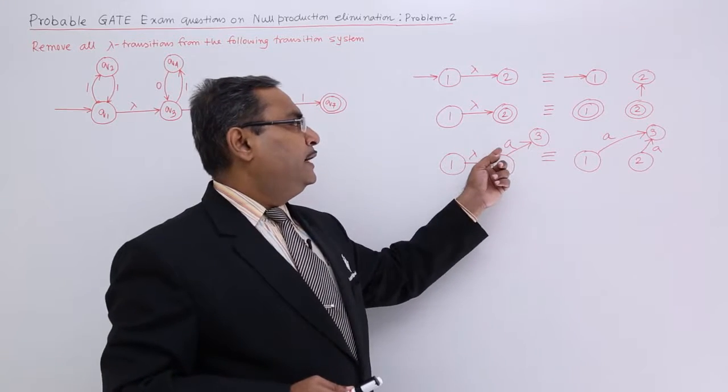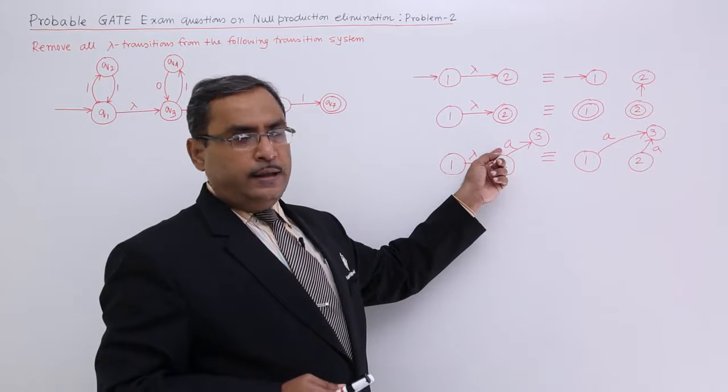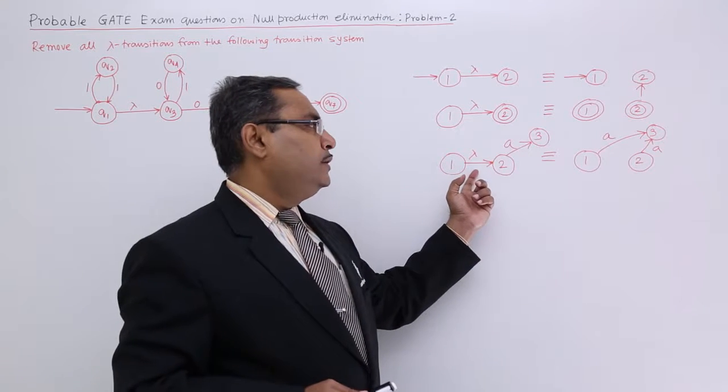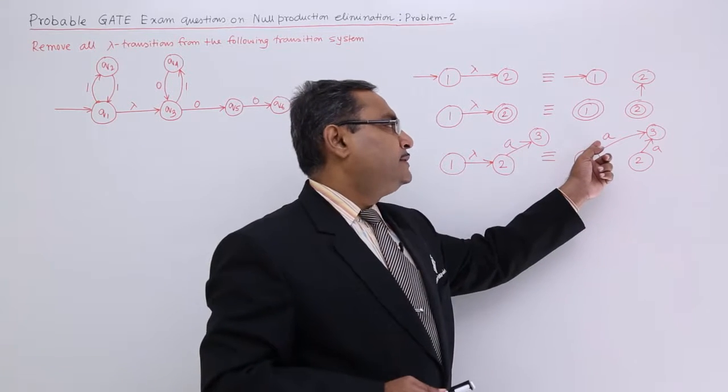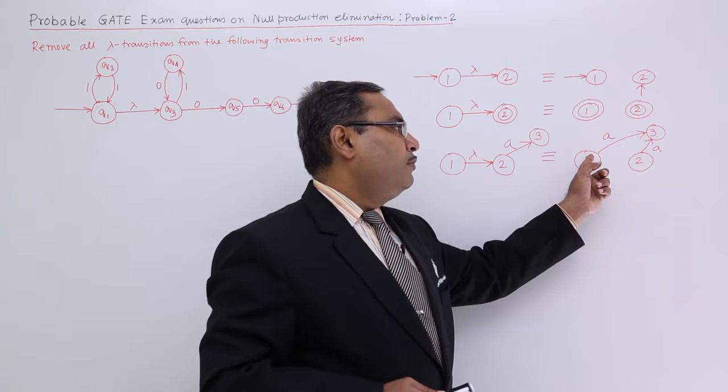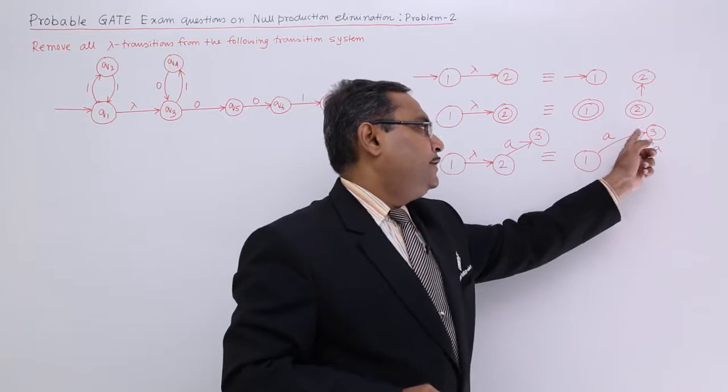From 2 to 3, if there is a transition with A, then after removal of lambda transition I should have that label same and that edge will be drawn from 1 to that particular next state.